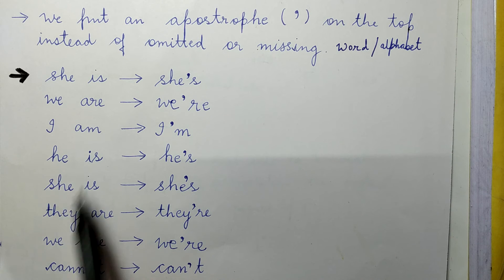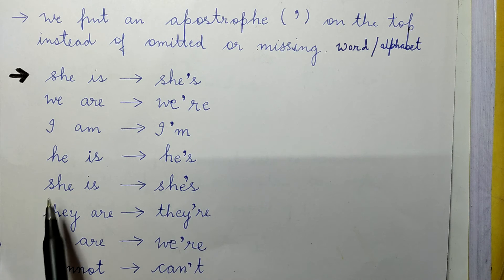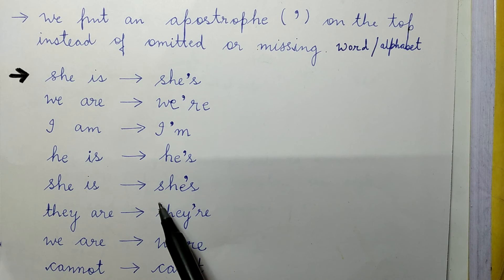She is becomes she's. I've also put an apostrophe on top of it where we have omitted the word, where I have also omitted the alphabet. These are the short forms.